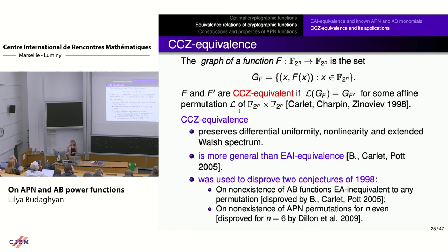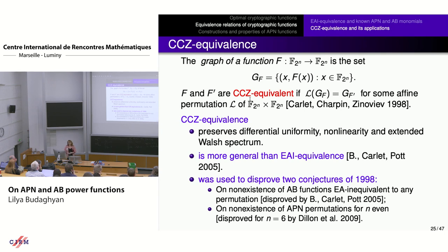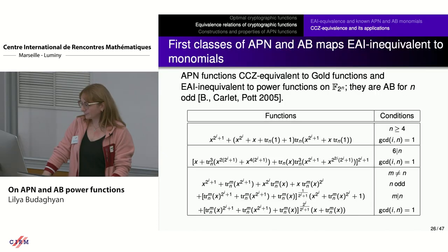If we denote by G_f the set of all pairs of input and output of the function, then two functions f and f' are called CCZ equivalent if the image of the graph of f is the graph of f' for some affine permutation L. CCZ equivalence preserves differential uniformity, non-linearity, extended Walsh spectrum, and therefore also APN and AB properties. It is currently the most general known equivalence relation preserving non-linearity and differential uniformity.